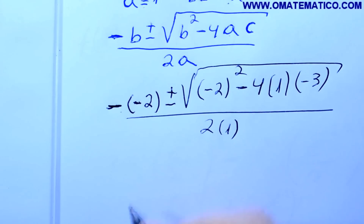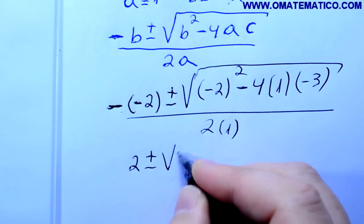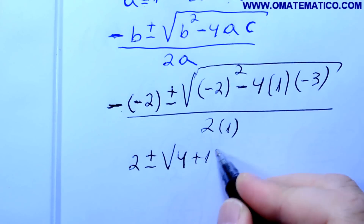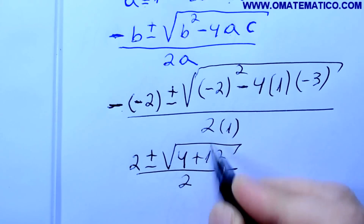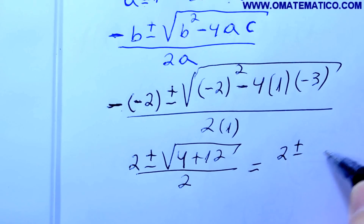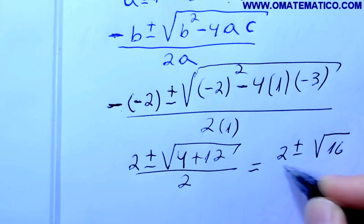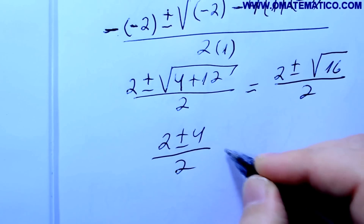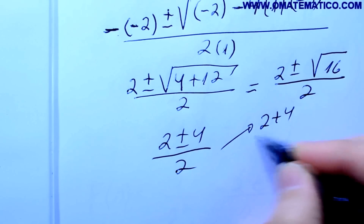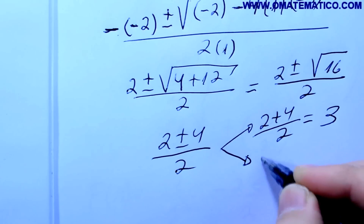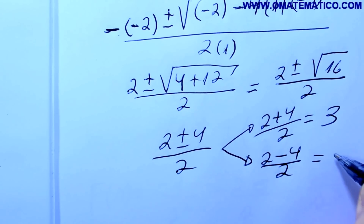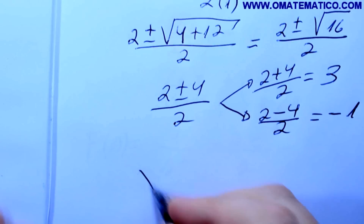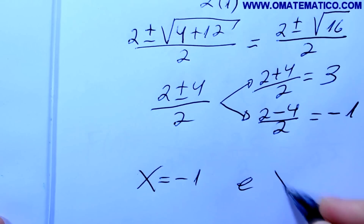Menos com menos dá mais 2, mais ou menos raiz de 4. 4 vezes 1 é 4, vezes 3 é 12, menos com menos dá mais 12, sobre 2. 2 vezes 1 é 2. Raiz de 16 é 4: 2 mais ou menos 4 sobre 2. Vai ser 2 mais 4 sobre 2, que dá 3. E o outro: 2 menos 4 sobre 2, que fazendo vai dar menos 1. Então, os dois pontos de interseção são x igual a menos 1 e x igual a 3.